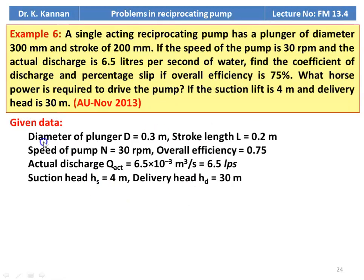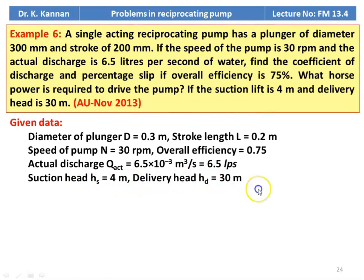The data given: diameter of the plunger is 0.3 meter, stroke length L equal to 0.2 meter, speed of the pump 30 RPM, overall efficiency 0.75, actual discharge 6.5 × 10⁻³ meter cube per second or 6.5 liters per second, suction head 4 meter, delivery head 30 meter.